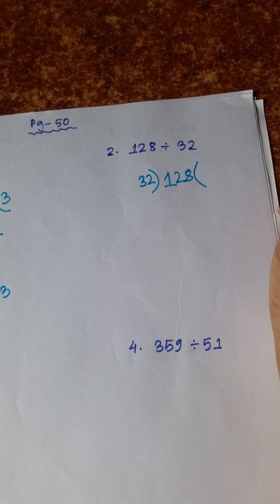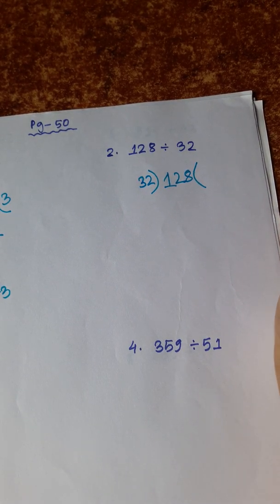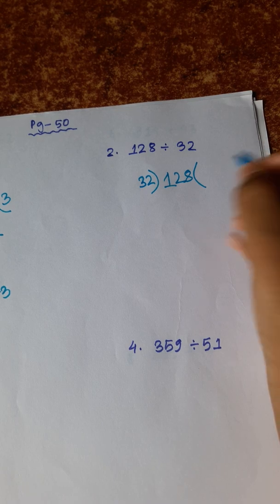32 ones are 32, 32 twos are 64, 32 threes are 96, 32 fours are 128.